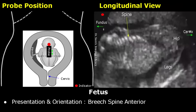The next breech orientation is breech spine anterior. The spine is facing anteriorly. This is how the image will look when you place the probe in this manner. The hips are directed towards the cervix and the fetal head is directed towards the fundus.